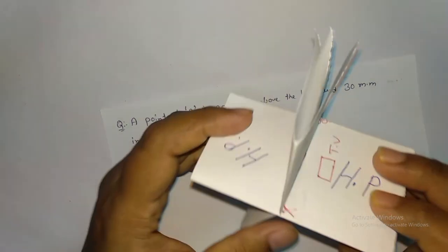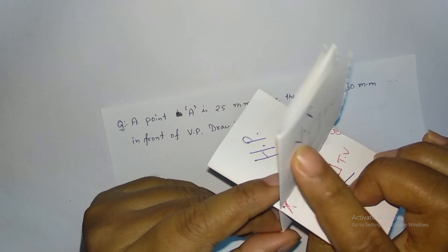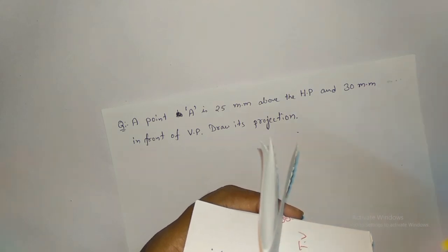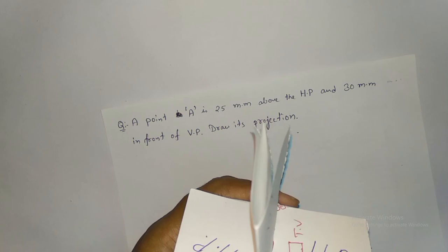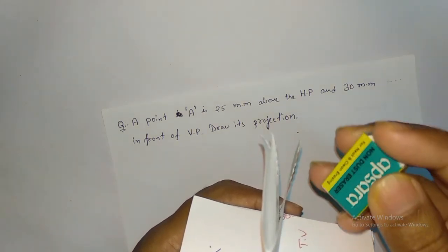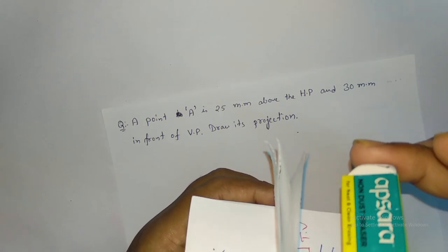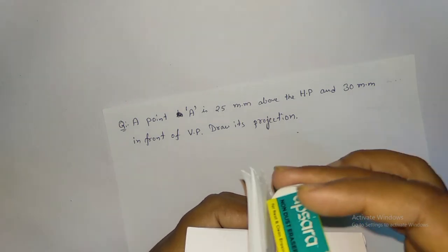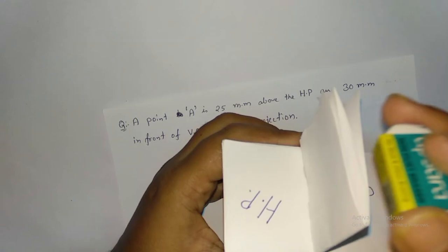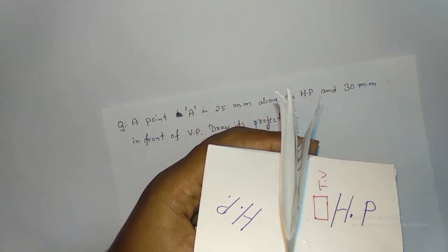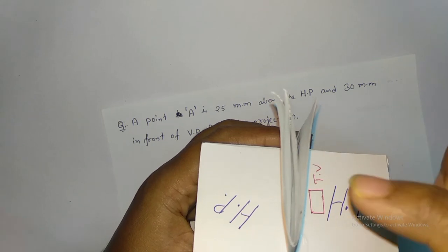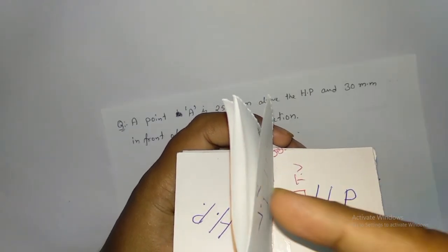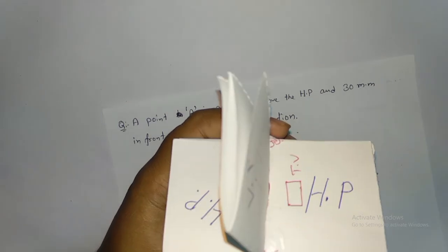This is the HP and this is the VP. Point A is 25mm above the HP and 30mm in front of the VP. If you see from the top view, its projection will come here, and if you see from the front view, its position will come here.